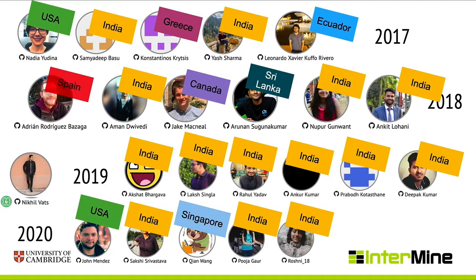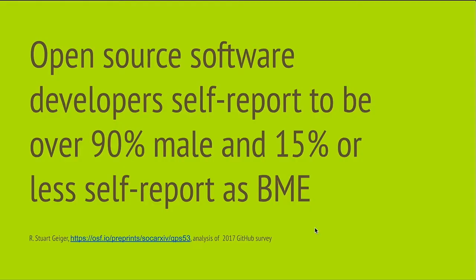In 2019, we spotted a bad pattern. Our country diversity wasn't too bad — we had people from the USA, India, Greece, Ecuador, Spain, Canada, and Sri Lanka. But our gender diversity was quite bad. To the best of my knowledge, 15 of our 17 interns over three years were men and two were women. This reflects a picture of open source in general — open source software developers self-report over 90% male, and 15% or fewer self-report as BME.